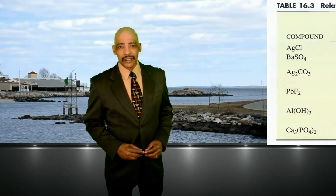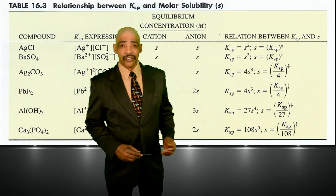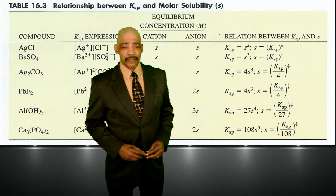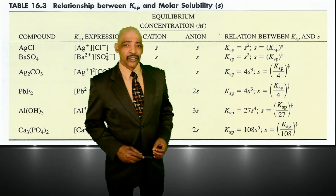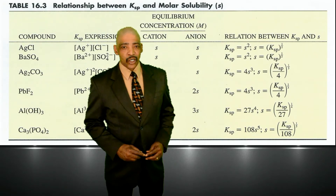A KSP value is an indication of the molar solubility of a compound. Compounds are classified as being either soluble in water or insoluble in water, but the term insoluble is somewhat misleading. No compound is completely insoluble in water.